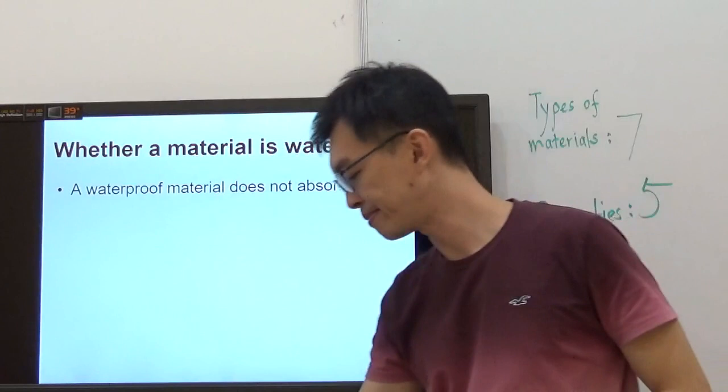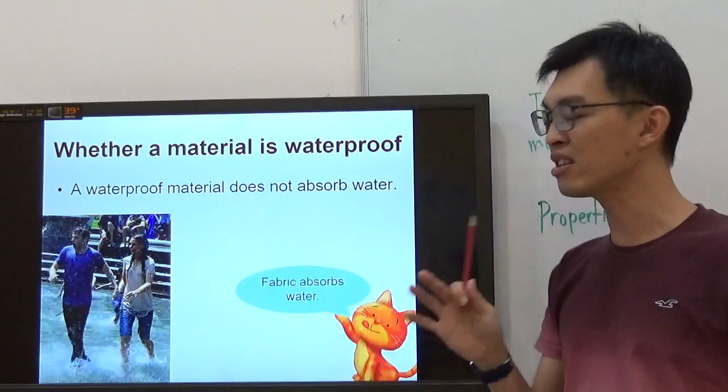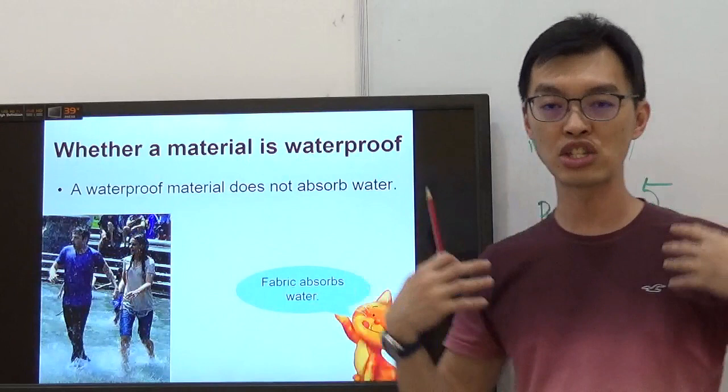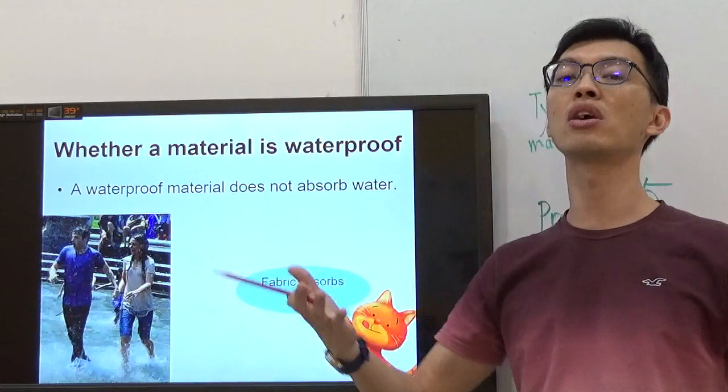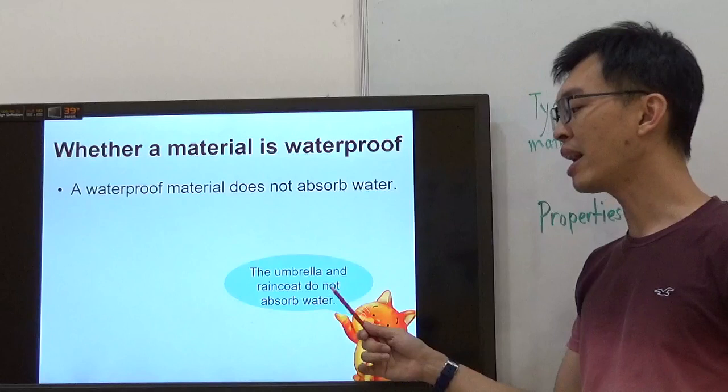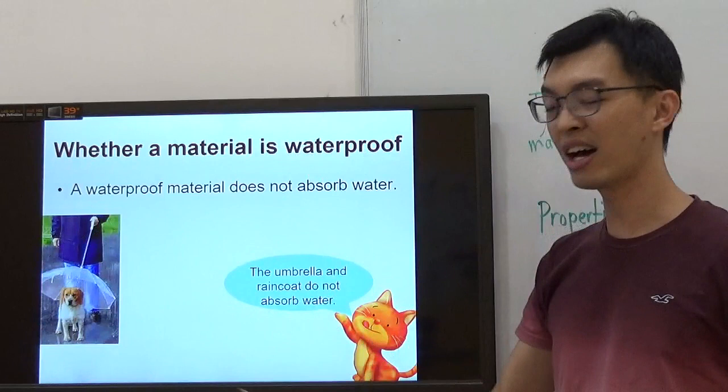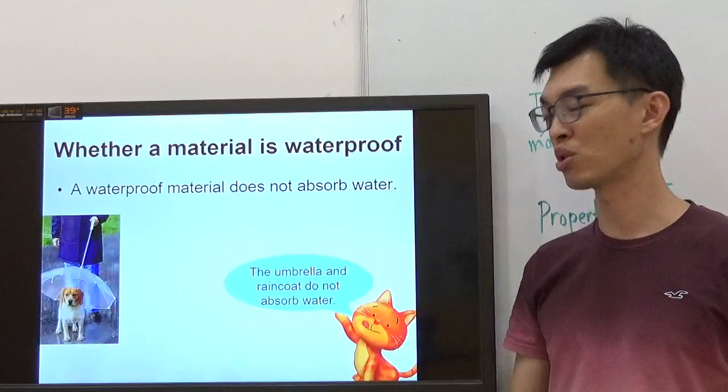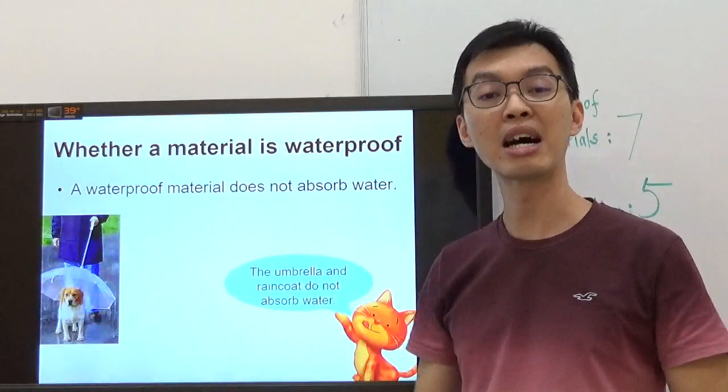Fabric absorbs water. Look at these two people trying to play in water. They're going to get drenched and wet because their fabric t-shirt does not absorb water. The umbrella and raincoat do not absorb water. This doggy needs an umbrella. There is an inverted umbrella for the doggy, so the doggy will remain dry because the umbrella does not absorb water. The umbrella is waterproof, and of course raincoat.